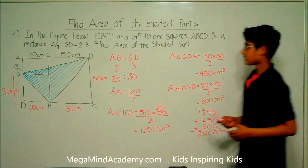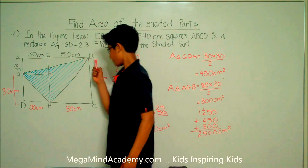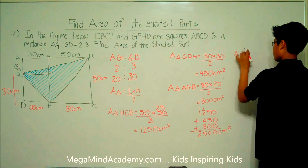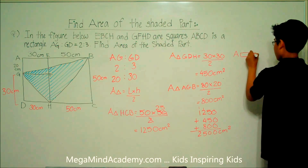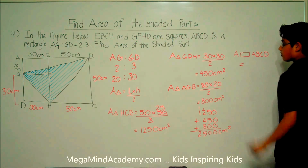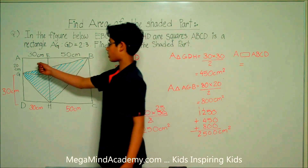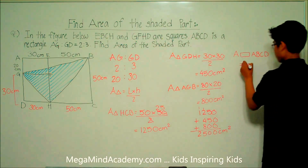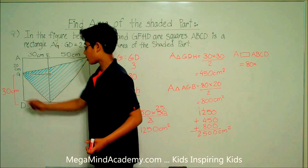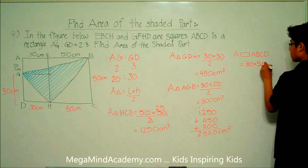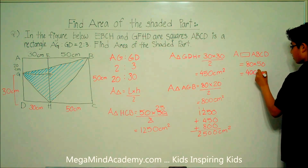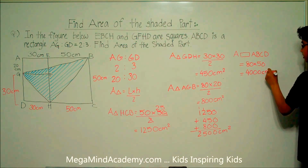Now let's find the area of rectangle ABCD. The length is equal to 30 plus 50, which equals 80, times the width, which is 20 plus 30, equaling 50. So 80 times 50 equals 4,000 centimeters squared.